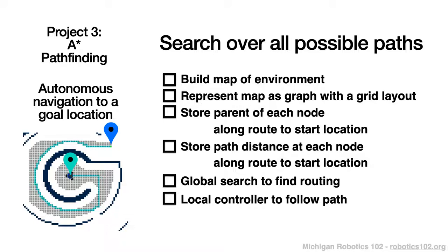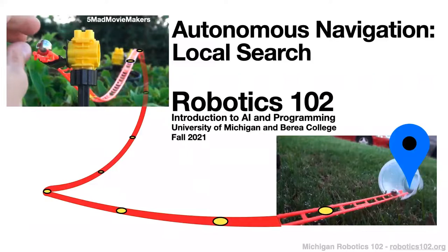Any questions about A* planning? I use planning and pathfinding interchangeably — pathfinding is just planning for our navigation case. With that, we're going to take a quick break and let Yana set up for the next activity.